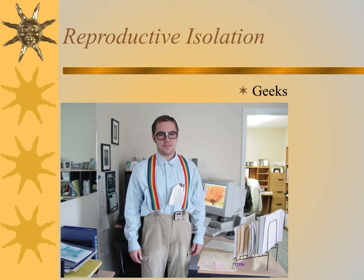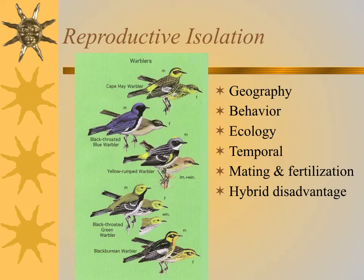Reproductive isolation means that other organisms can't or won't breed with them, so they're left on their own — they only breed with their own type. We can think of a variety of reasons for reproductive isolation: maybe they're isolated on an island, which we think is really important, or some barrier limits their meeting other organisms they might breed with, or their behaviors isolate them.